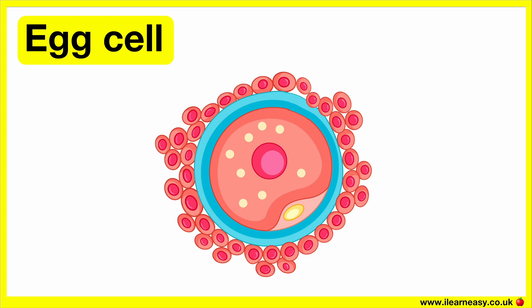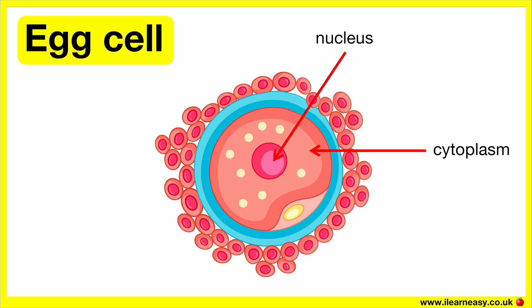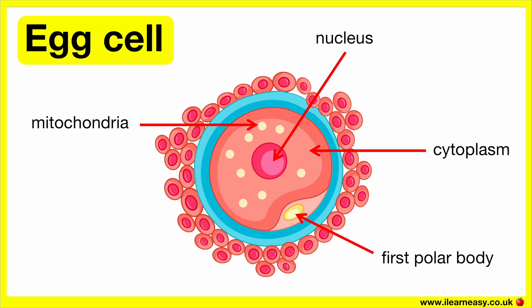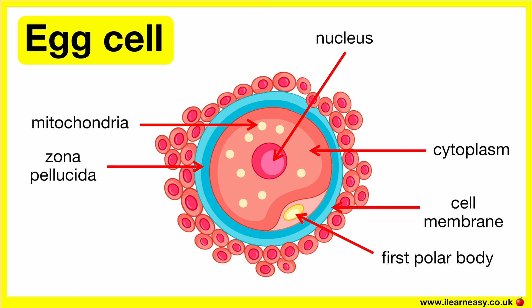The egg cell is adapted to its function. The parts of an egg cell are: nucleus, cytoplasm, mitochondria, first polar body, zona pellucida, cell membrane, and follicle cells. All of these parts aid its function.